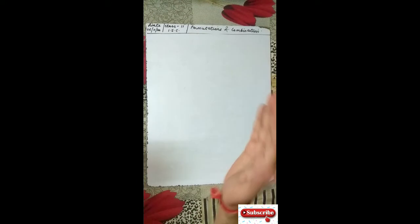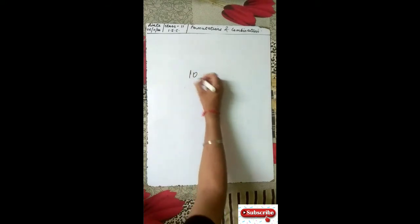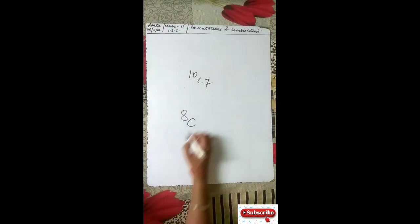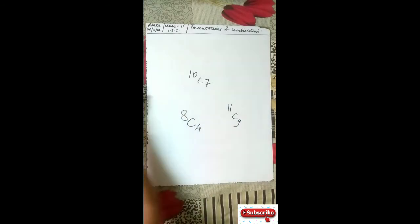Now here come some word problems. How many different teams of 7 players can be made from 10 players? You have 10 players and need to make a combination of 7 — this is a combination case: 10C7. How many selections of 4 books can be made from 8 different books? From 8, make a combo of 4: 8C4. Similarly, 9 stamps chosen from 11 different stamps: 11C9.